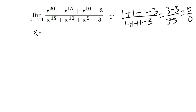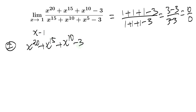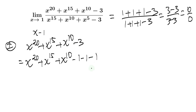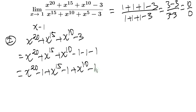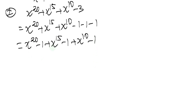So we have the indeterminate form 0 over 0, which means we have to simplify the term (x minus 1) in both numerator and denominator. Let's work on the numerator: x to the 20 plus x to the 15 plus x to the 10 minus 3. I can rewrite this as x to the 20 minus 1, plus x to the 15 minus 1, plus x to the 10 minus 1.